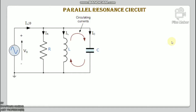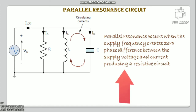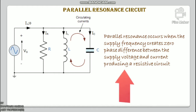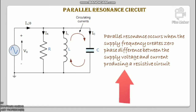What is a parallel resonance circuit? Parallel resonance occurs when the supply frequency creates zero phase difference between the supply voltage and current, producing a resistive circuit. In many ways, the parallel resonance circuit is exactly the same as the series resonance circuit — both are three-element networks containing two reactive components, making them a second-order circuit. Both are influenced by variation in supply frequency and both have a frequency point where the two reactive components cancel each other out.